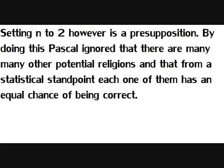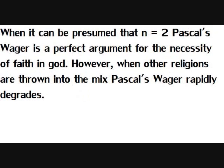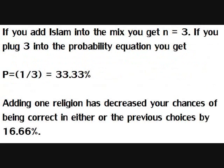Setting n to 2, however, is a presupposition. By doing this, Pascal ignored that there are many other potential religions, and that from a statistical standpoint, each one of them has an equal chance of being correct. When it can be presumed that n equals 2, Pascal's Wager is a perfect argument for the necessity of faith in God. However, when other religions are thrown into the mix, Pascal's Wager rapidly degrades.